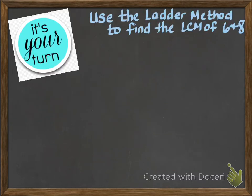So now we're going to try it. In your composition notebook, on your next available lines, we're going to try to use the ladder method to find the LCM of 6 and 8. So begin by listing 6 and 8 side by side, and then go ahead and draw your ladder underneath.